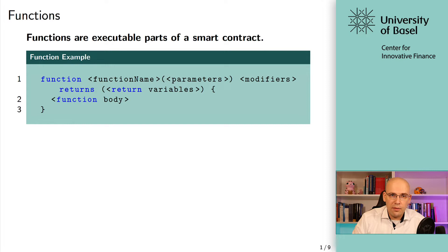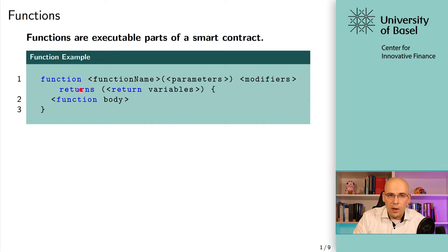You have some parameters that somebody who is invoking this function can send along. For example, when the function would store something on the blockchain, then you have to send that data along the transaction whenever you're invoking this function — this would be part of the parameters. Then we will talk about modifiers that can modify how the function can be accessed. We are talking about return values later on. And then, of course, you have the function body within these curly brackets — that's where the instructions for the function actually will be.